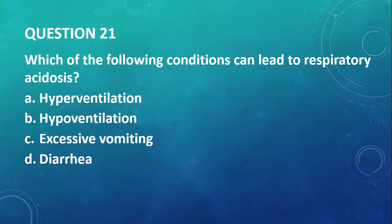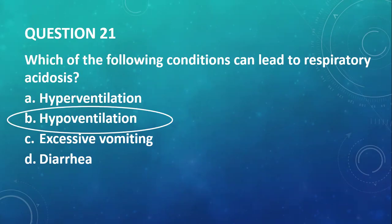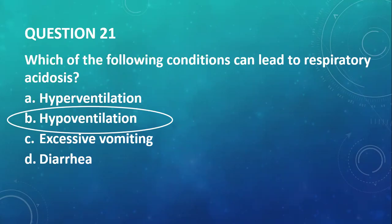Question number twenty-one: which of the following conditions can lead to respiratory acidosis? Hyperventilation leads to respiratory alkalosis, not acidosis. Excessive vomiting and diarrhea are metabolic issues. Any condition that does not allow one to breathe well leads to hypoventilation, which causes respiratory acidosis. Such conditions include COPD, strangulation, asthma attacks, and pulmonary conditions that do not allow people to breathe.